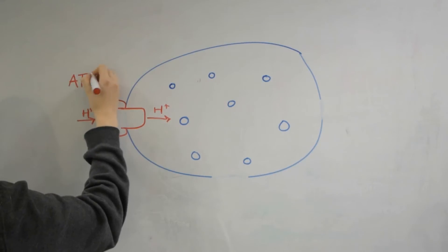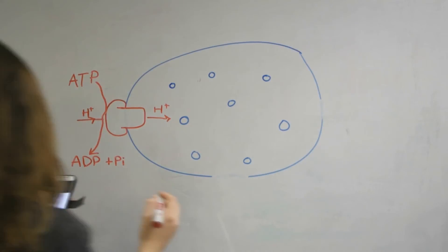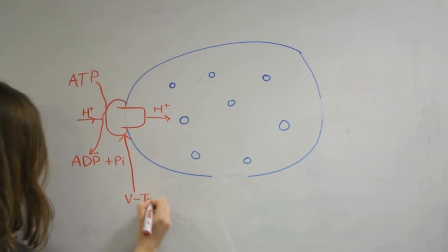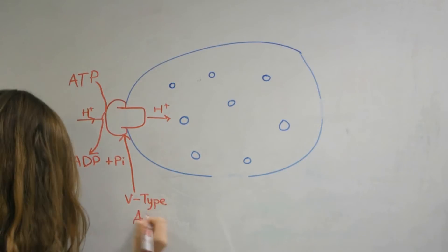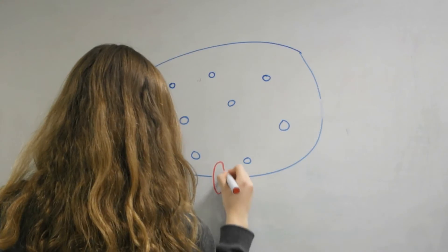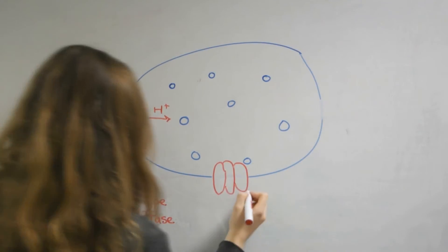There must be an acidic environment present in the lumen for these enzymes to operate at their optimum activity. Currently being drawn is a V-type ATPase. It's responsible for pumping protons or hydrogen ions across the membrane into the lumen to maintain its acidity. As the hydrogen ions move through the ATPase it converts ATP to ADP plus phosphate. This supplies the energy necessary for maintaining the active transport against the concentration gradient and for other cellular processes.